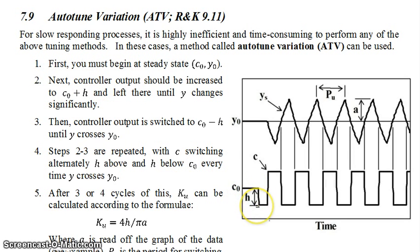It doesn't matter which one you choose. You change your controller output by some value H. Switch it down to there. When that happens, eventually your controlled variable will start to change as well. When your controlled variable reaches some significant amount of change, which you decide—it doesn't really matter, you just decide it to be some value.